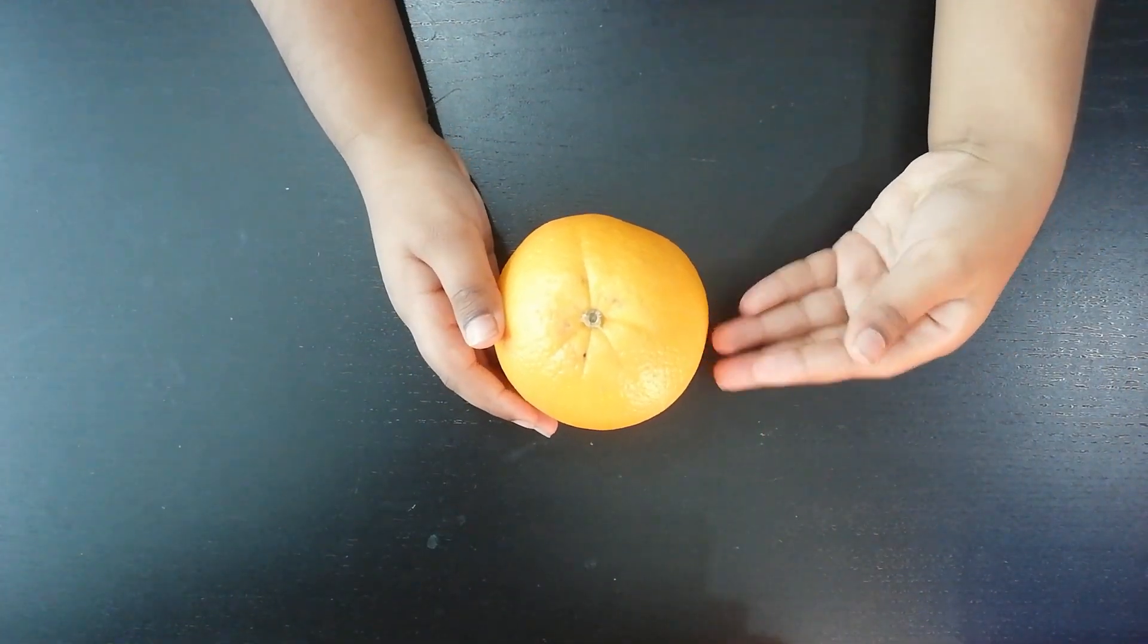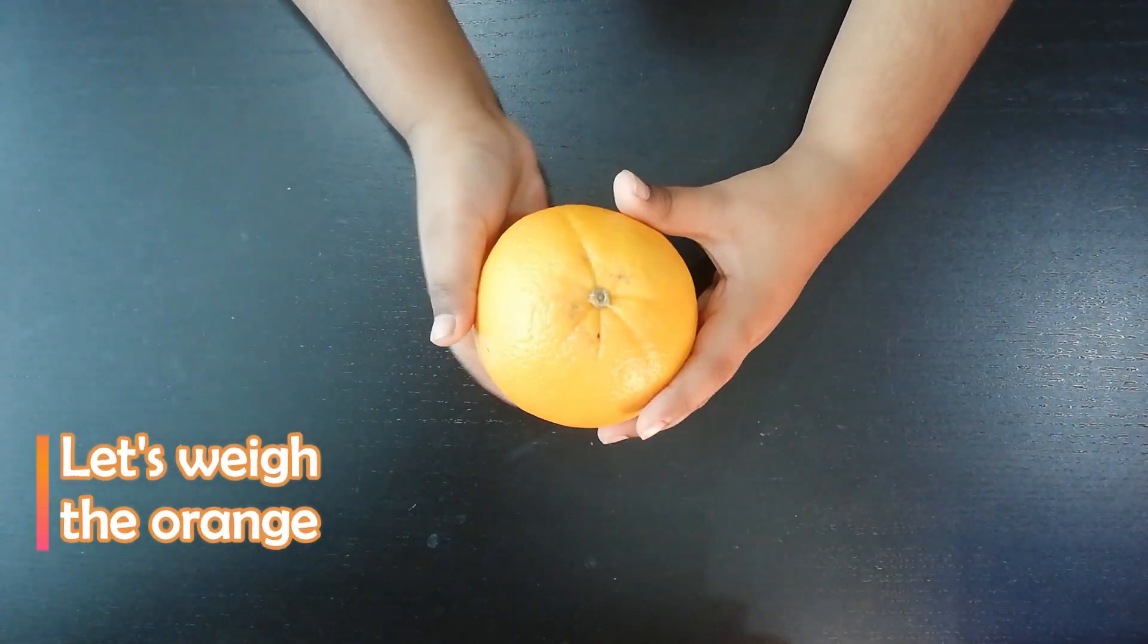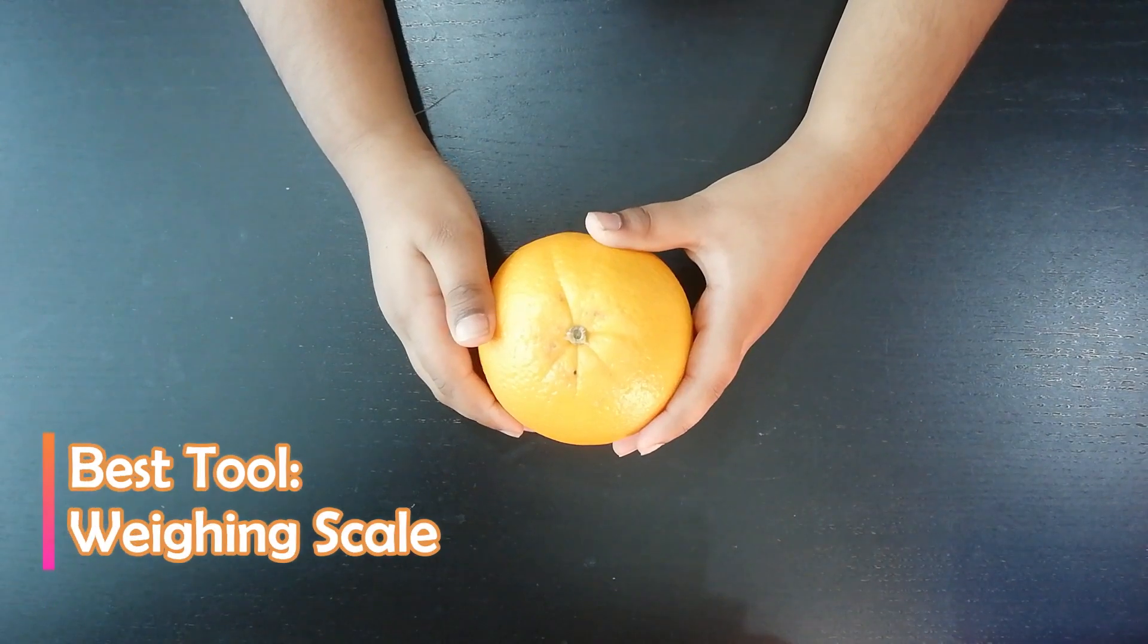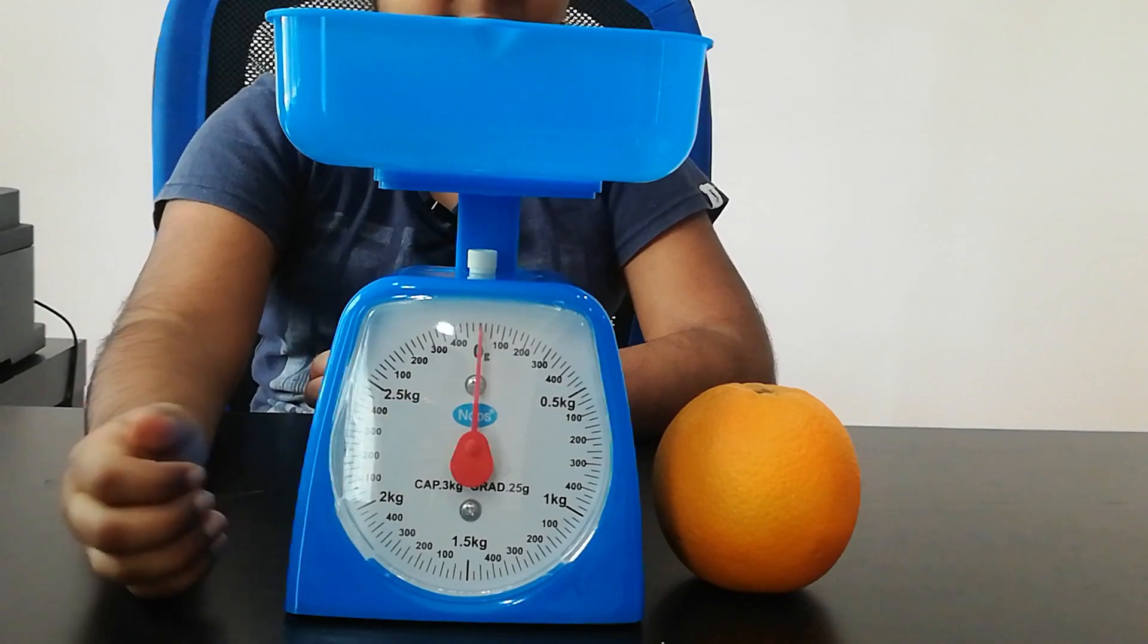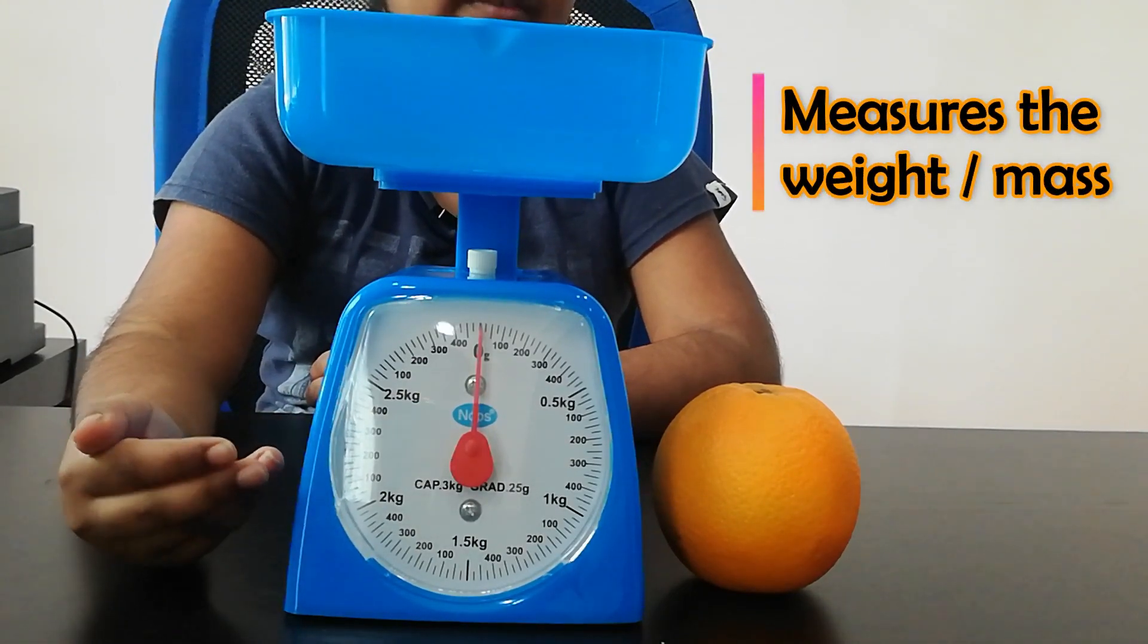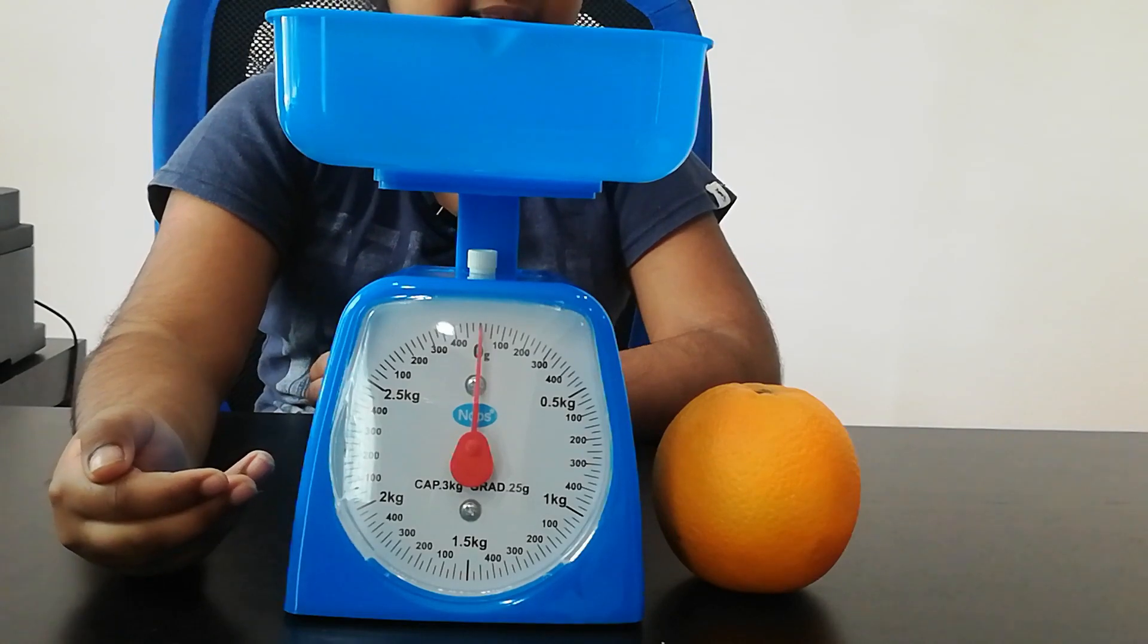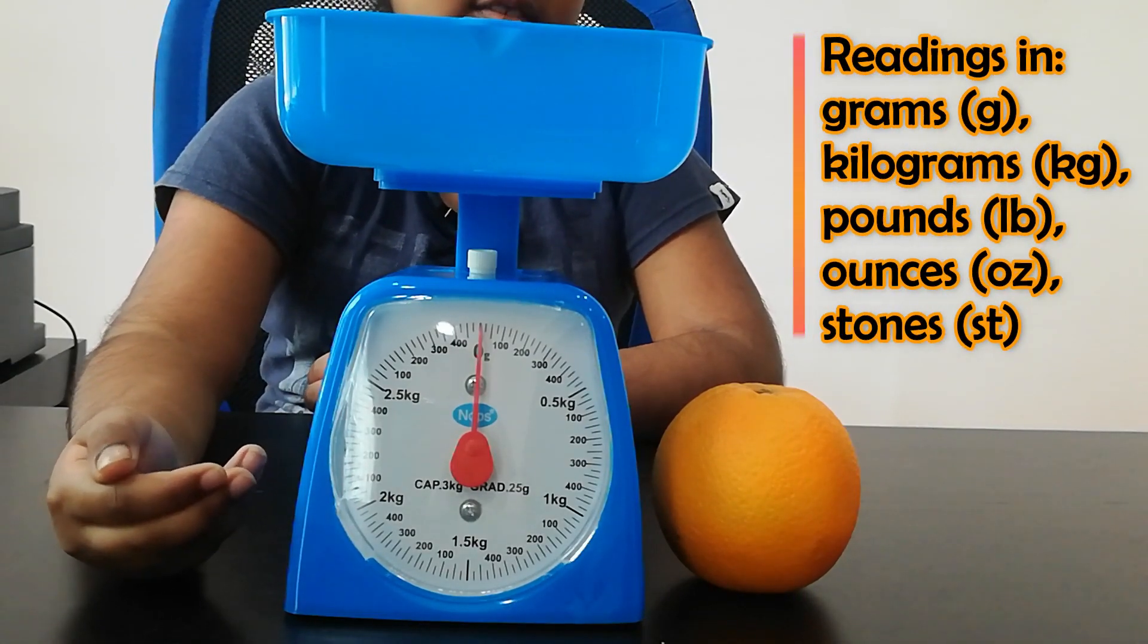This is an orange. Let's find out the weight of an orange. The best measurement tool to find out the weight is using a weighing scale. This is because weighing scales measure the weight or mass of an item and provide the reading in grams, kilograms, pounds, ounces or stones.